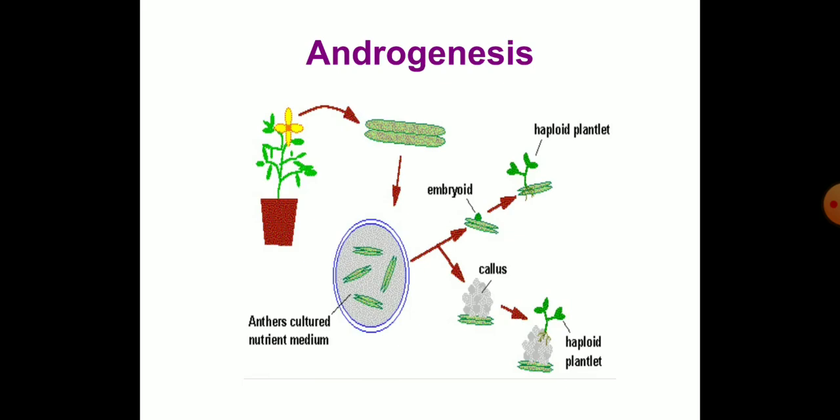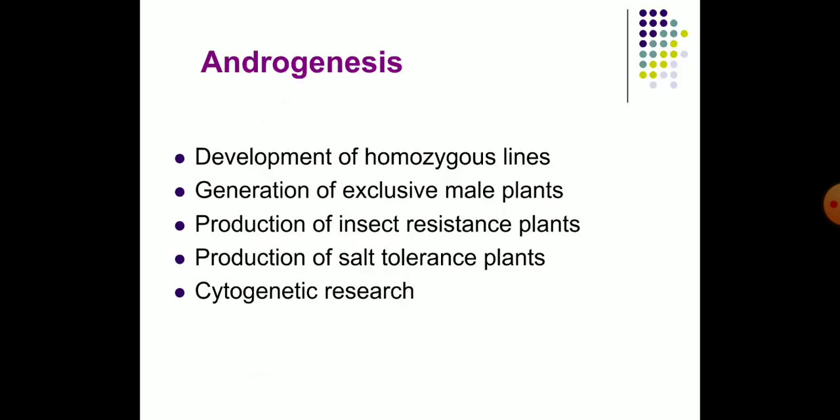Androgenesis: The aim of androgenesis or anther culture is to get haploid plants by induction of embryogenesis. Haploid plants have a single complete set of chromosomes, which in turn may be useful for the improvement of many crop plants. In vitro production of haploids is of great significance in plant breeding programs.